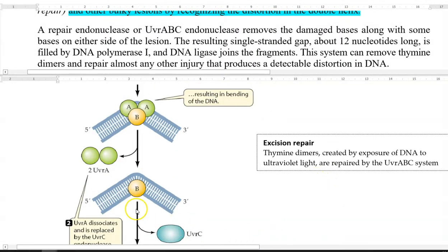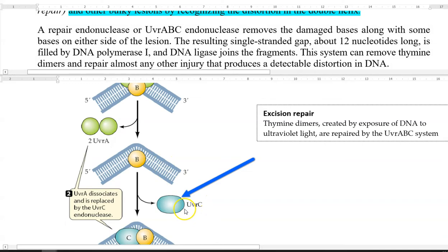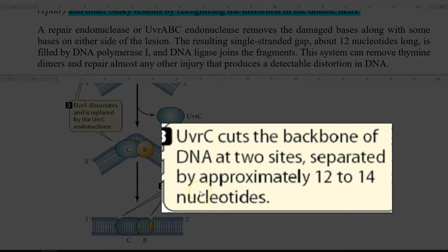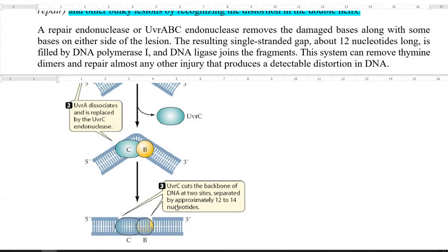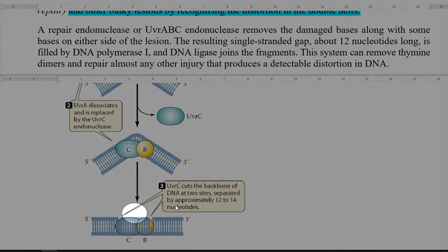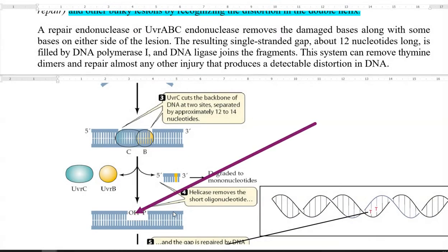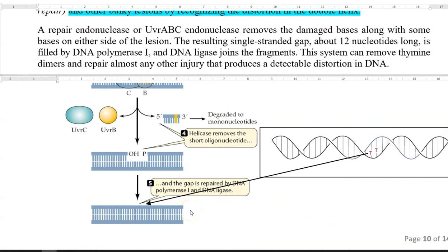After that step, the UVR-A endonuclease dissociates and UVR-C joins at that site. UVR-C cuts the backbone of the DNA at two sides, separated by approximately 12 to 14 nucleotides in length, causing a small single-stranded gap in the DNA. That small stretch of DNA that has been cut is degraded into mononucleotides, and the gap is filled with the help of DNA polymerase I. Finally, DNA ligase joins the fragments together. This system can remove thymine dimers as well as repair almost any other injury that produces a detectable distortion in the backbone of the DNA molecule.